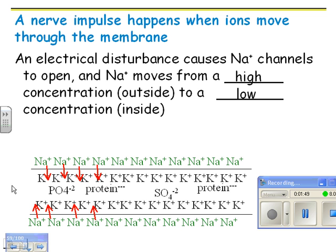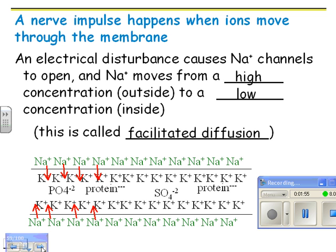And so that is facilitated diffusion, because it's going high to low, and it's going through a protein. This is called facilitated diffusion. That's different from simple diffusion, because simple diffusion goes right through the lipid bilayer. And it's different from active transport, because active transport requires energy.